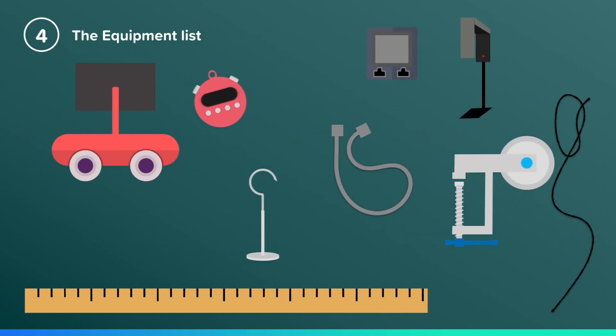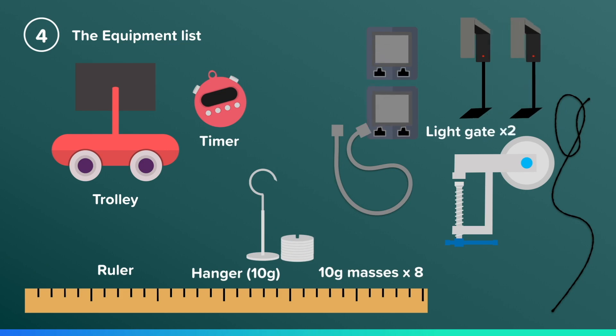You are going to need a trolley, a ruler, a timer, a hanger, eight 10-gram masses, two light gates, light gate cables, a pulley, and a piece of string.